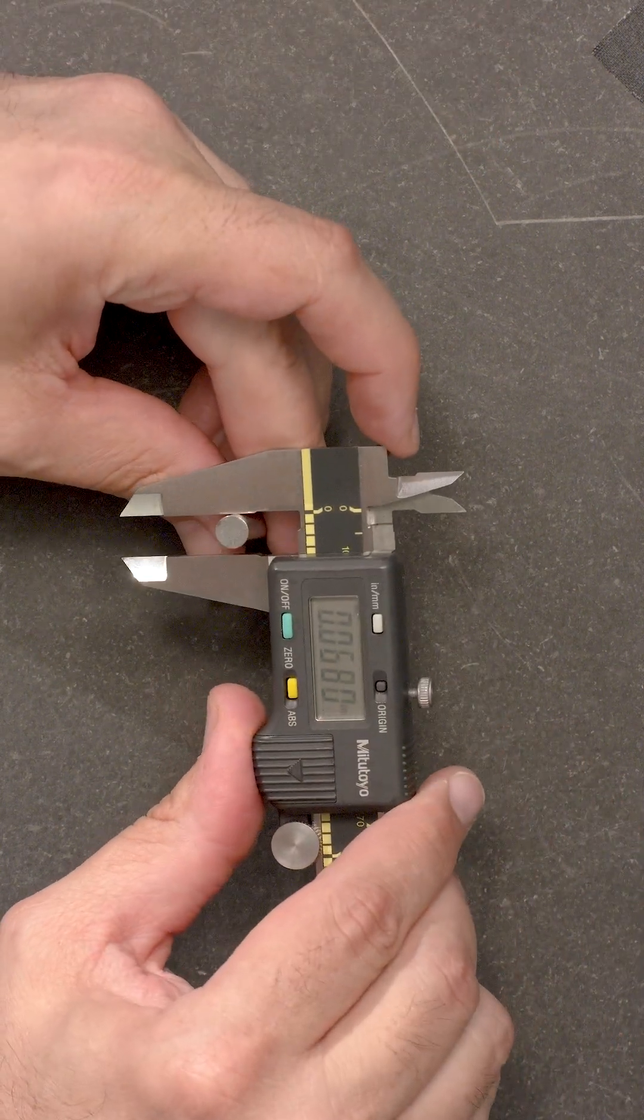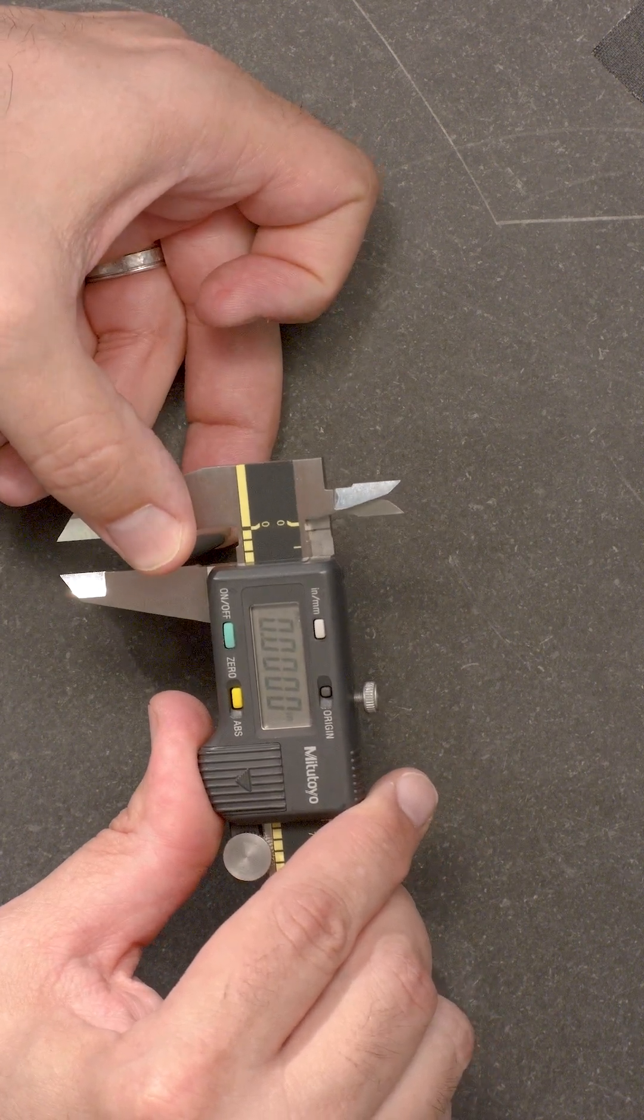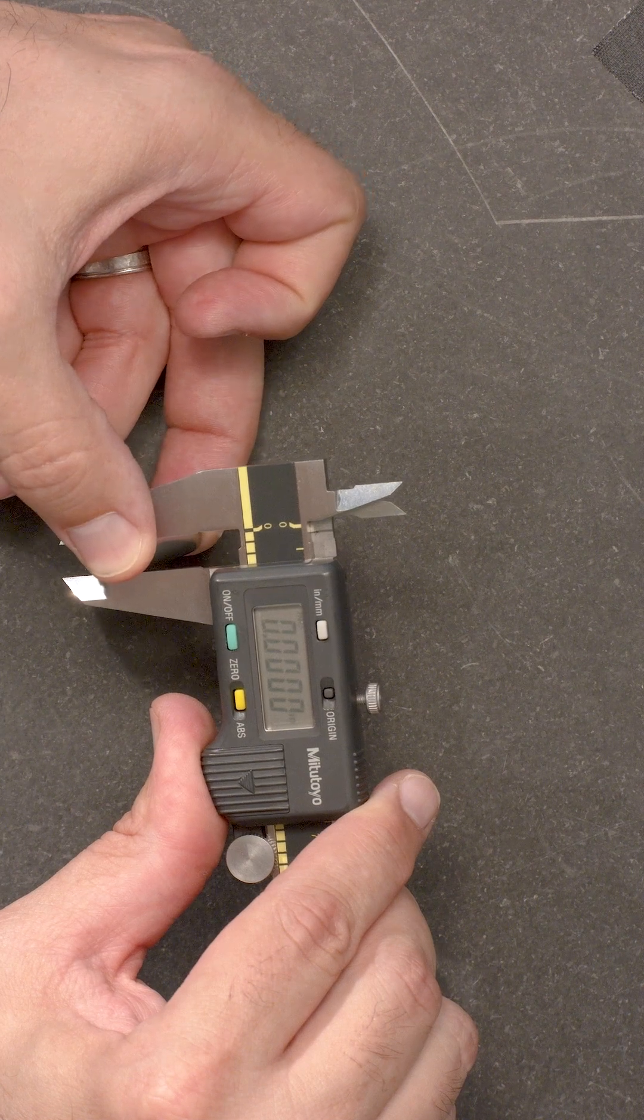This is done by simply moving the gauge pin from near the beam to the tips of the jaws while observing the readings.